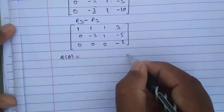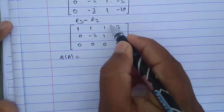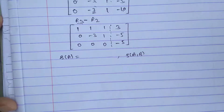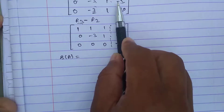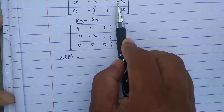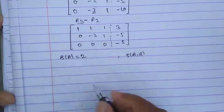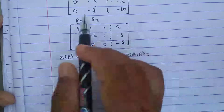Now we find the rank of A and rank of the augmented matrix [A|B]. To get the rank of A, we hide the last column. The rank equals the number of non-zero rows. Row 1 is non-zero, row 2 is non-zero, but row 3 is zero. So the rank of A equals 2.